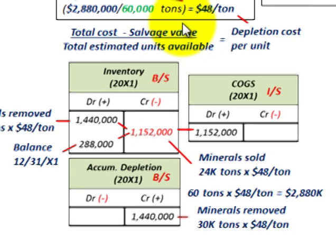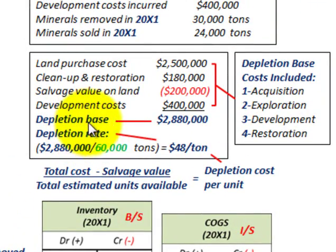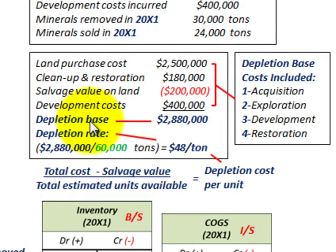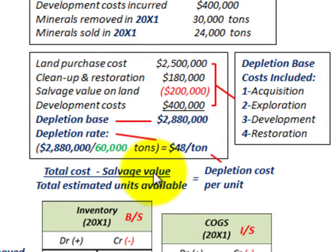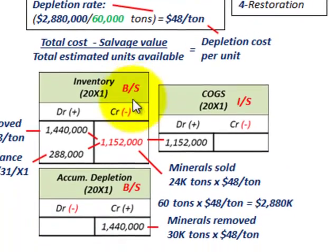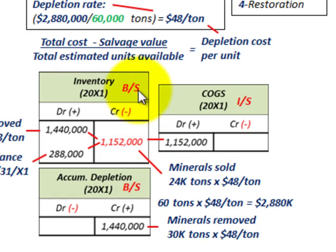We've just gone through a basic example for calculating the depletion base and depletion rate. The depletion cost on a per unit basis is simply the total cost less any salvage value, divided by the total estimated units available — that's the general equation. We then recorded the basic journal entries involved at the end of the year.